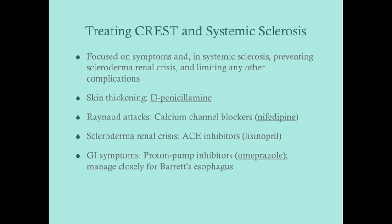For scleroderma renal crisis, use ACE inhibitors — any patient with systemic sclerosis should be on an ACE inhibitor. For GI symptoms, use a proton pump inhibitor. GI symptoms in CREST or systemic sclerosis could be GERD or achalasia, but it's almost always GERD. These patients are three times more likely to develop Barrett's esophagus and therefore three times more likely to develop esophageal cancer compared to patients with regular GERD alone.